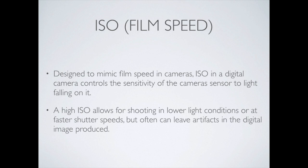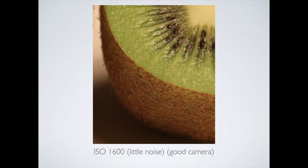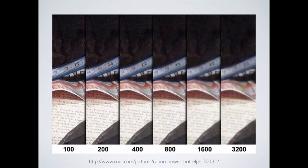Our phones are getting really good at this, so we don't need the flash anymore. The problem is we can get all these little speckles — when the ISO gets too high, our sensor becomes too sensitive and picks up artifacts and wrong colors. However, if we have a good camera, we might be able to boost that ISO quite a lot without the distortion. Here's a side-by-side as we go from ISO 100 all the way up to ISO 3200 — same image, same lighting conditions. At ISO 100 everything's pretty sharp, but by the time we move up into 1600 or 3200, we're starting to get that artifacting.